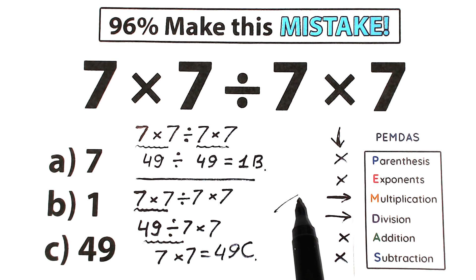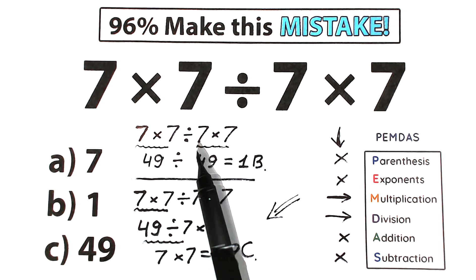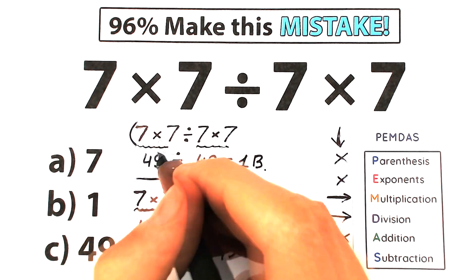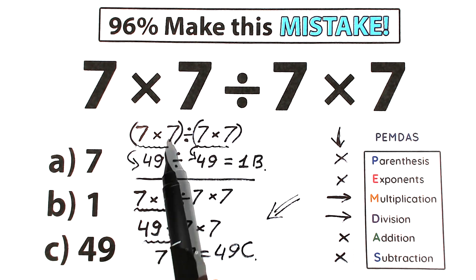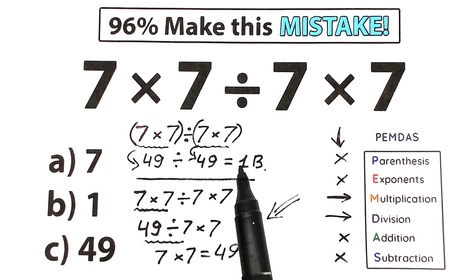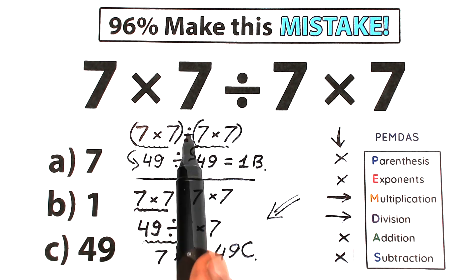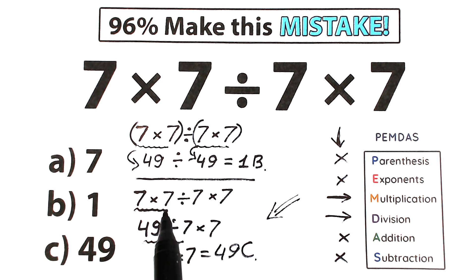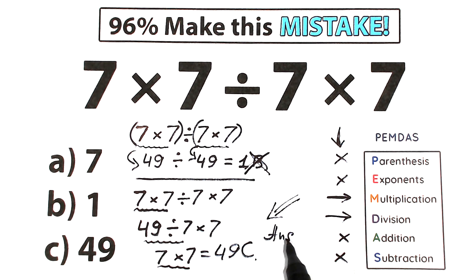According to PMDMC, the correct answer is 49, 100%. Now, the solution giving answer 1 would only be valid with parentheses — like (7×7) ÷ (7×7) — because then multiplication inside the parentheses would have higher priority than division. Parentheses and brackets are always the first step. But in our case we don't have parentheses, only multiplication and division, which go in strict left-to-right order with equal priority. So option B is wrong, and the correct answer is option C, 49, according to PMDMC order of operations.